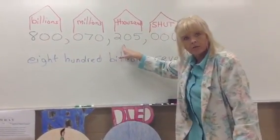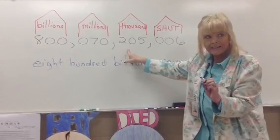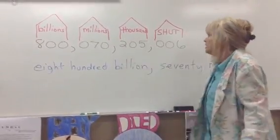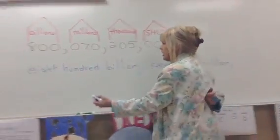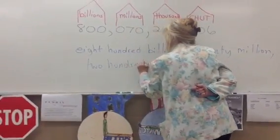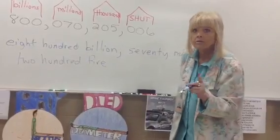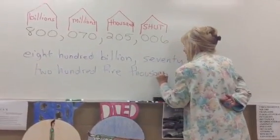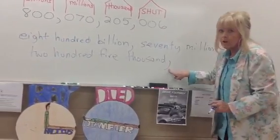Who's in that house? Two hundred five. And you don't say 'and' unless you see a decimal point. So you just write two hundred five. What's the name of the house? Thousand. Two hundred five thousand. If they put a comma, you put a comma.